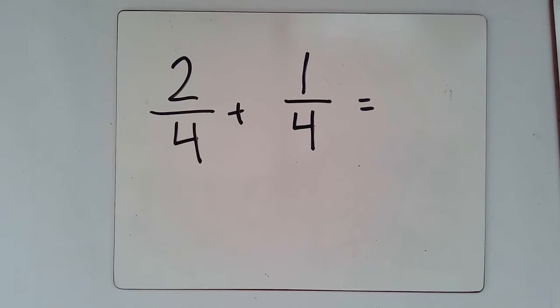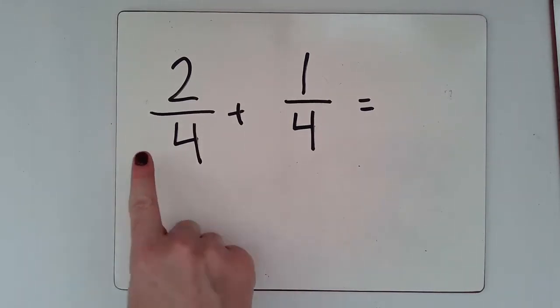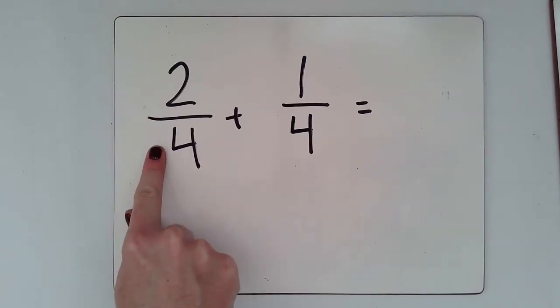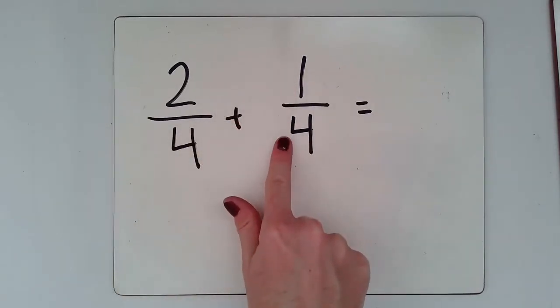So we're going to be adding and subtracting fractions using number lines and models to help us visualize this and what's happening. For our first problem we're going to be taking two fourths and we're going to be adding it with one fourth.